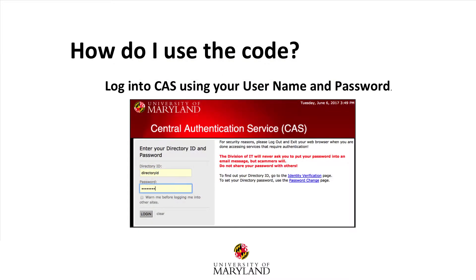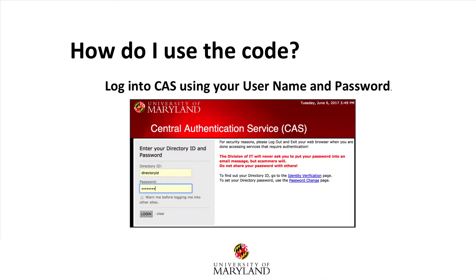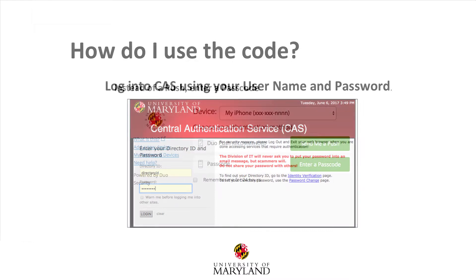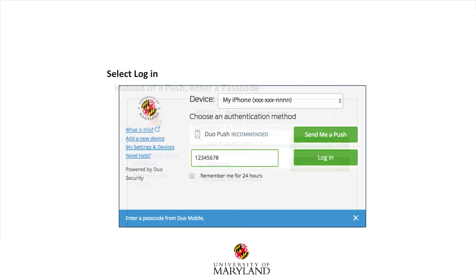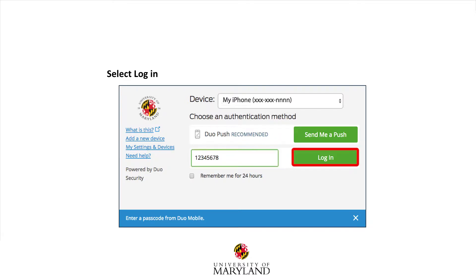To use one of the codes you have generated, log in to CAS using your username and password, then select Login. When this screen appears, instead of sending a push, select Enter a Passcode. Enter one of the generated passcodes, then select Login.